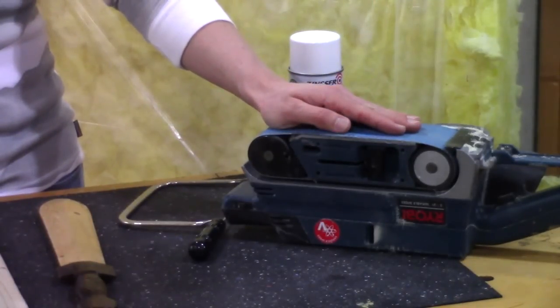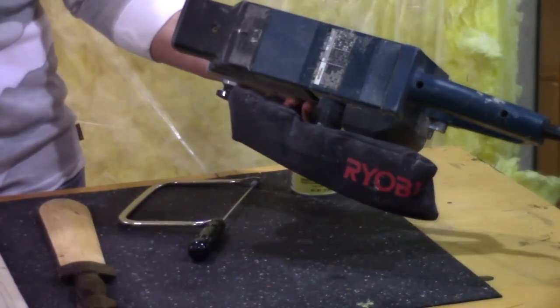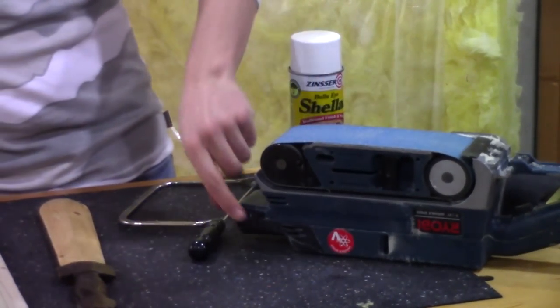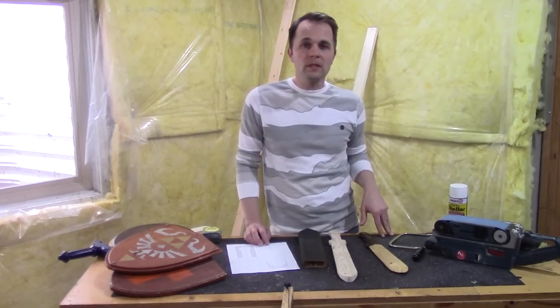Now you are going to need a belt sander. This is a RYOBI belt sander. I got it from Home Depot and it's very big and heavy. You can adjust the speed on it here. And then the next thing you'll need is a coping saw.